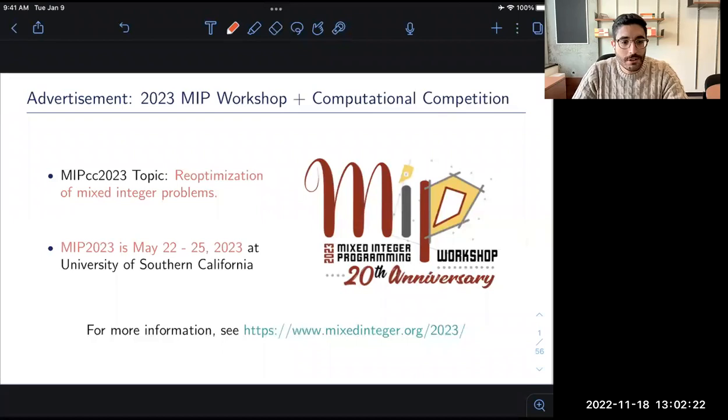Welcome everybody to today's session of DOTS. I'm happy to introduce our first speaker of the day, Joseph Patt. Joseph is an assistant professor at the University of British Columbia in the Sauter School of Business, where he also has an associate appointment in the computer science department.